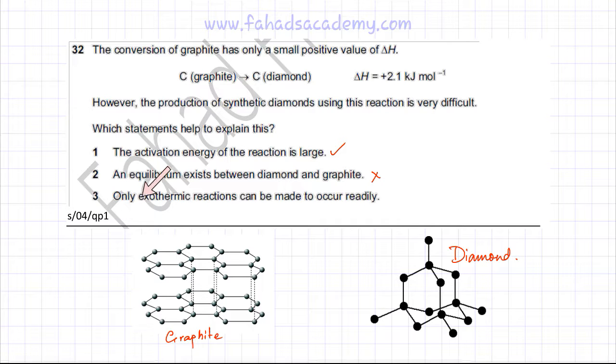And the third statement is that only exothermic reactions can be made to occur readily, which is also incorrect because the speed of the reaction or the spontaneity of a reaction doesn't depend on the enthalpy change, whether it's exothermic or whether it's endothermic. What it depends on is the activation energy.